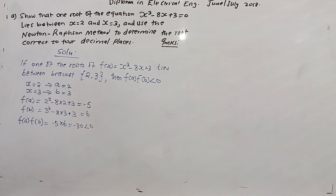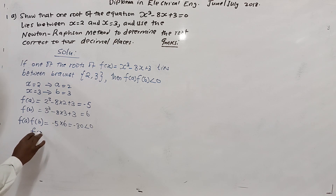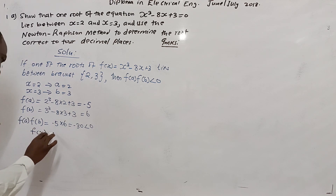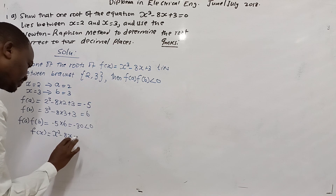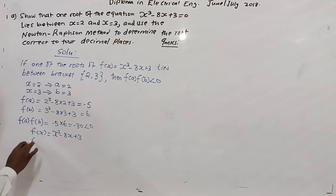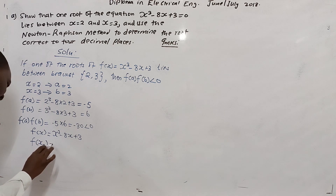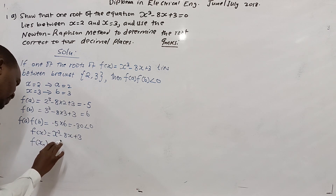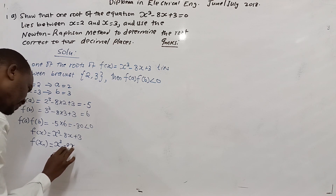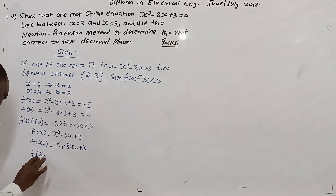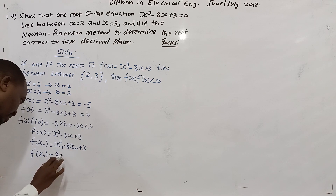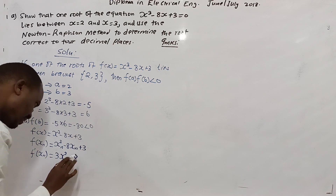For the next step, we put this into the Newton-Raphson formula. We already know f(x) = x³ - 8x + 3, so f(xₙ) = xₙ³ - 8xₙ + 3. Let us also define the first derivative: f'(xₙ) = 3xₙ² - 8.